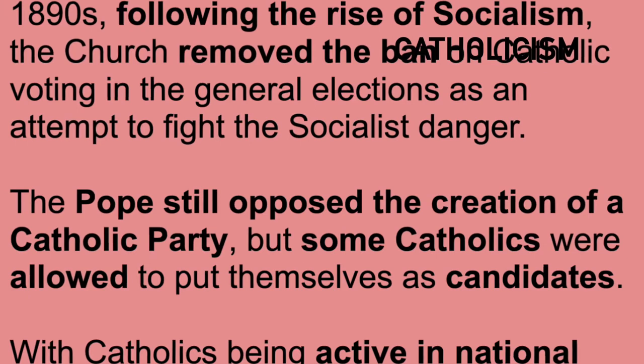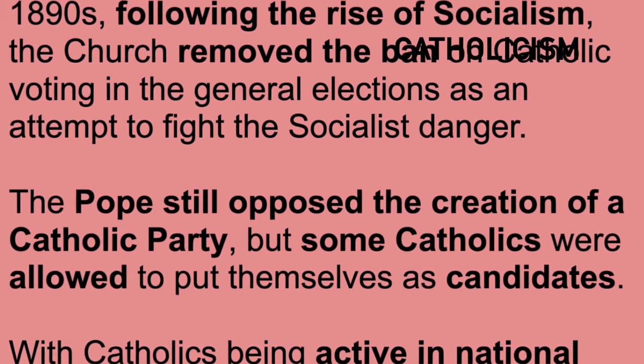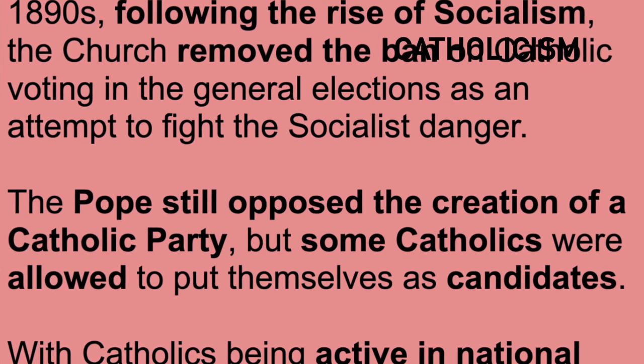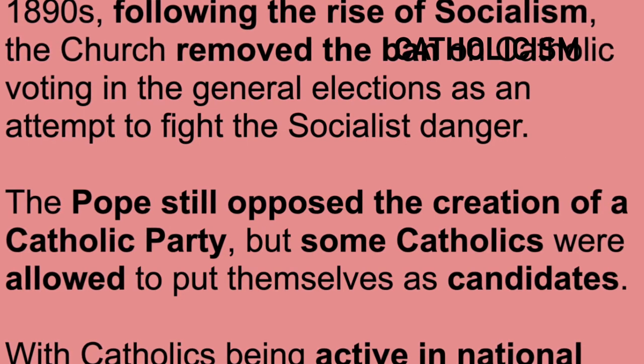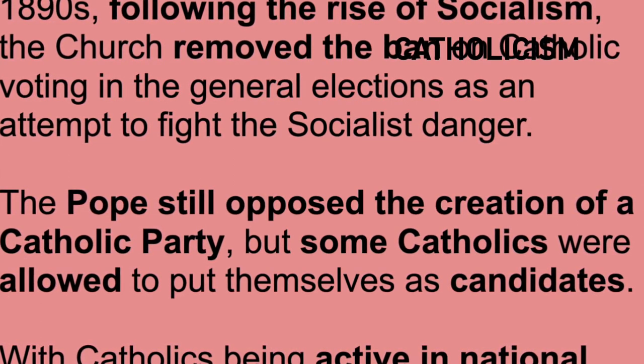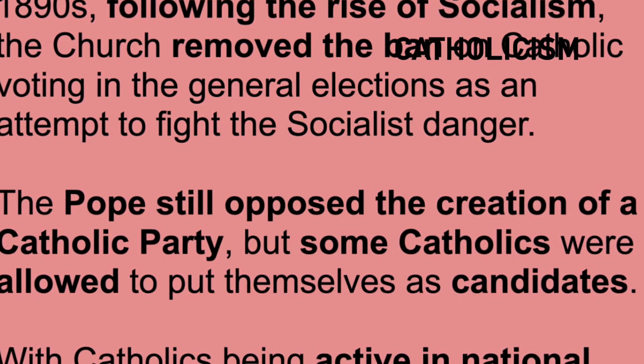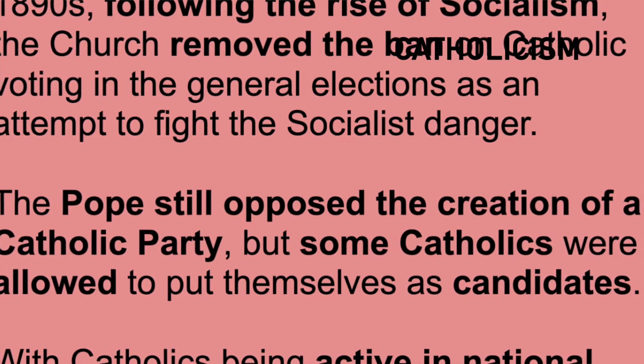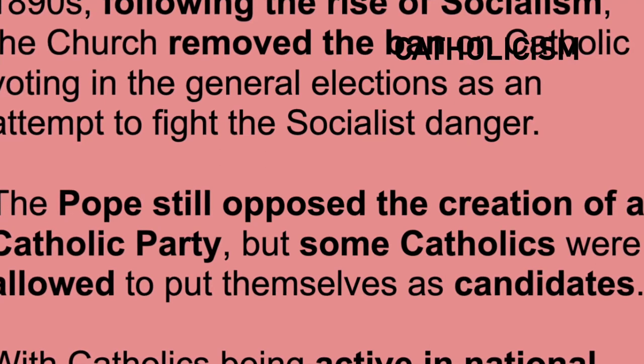This leads us to the next threat — Catholicism. We referenced some of the early hostilities between the Catholic Church and the Italian state, but now let's go more in-depth about how these tensions developed, especially following the rise of socialism. Although hostilities remained between the Church and the Italian state throughout most of the 1900s, in 1895, following the creation of the PSI, the Pope finally lifted the ban on Catholic participation in the Italian political system. This was mainly because both the Church and the Italian state saw socialism as a common enemy, and the Pope hoped that by allowing Catholics to vote for parties against socialism, together they could eliminate or at least repress this imminent threat.